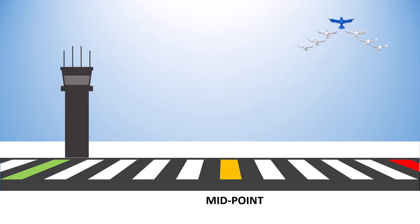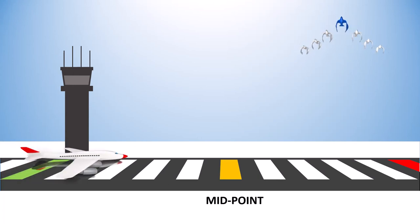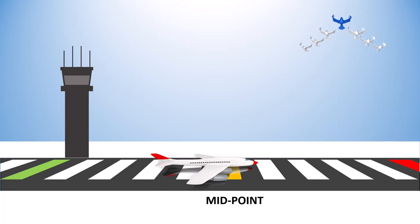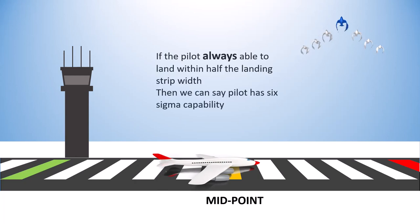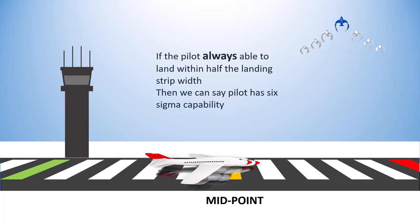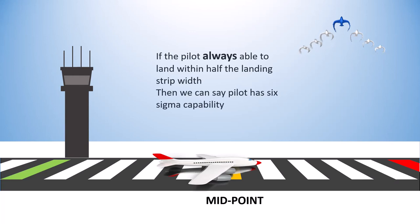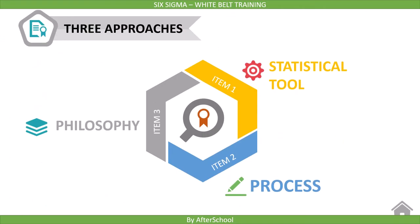The next lecture will be on what is Six Sigma. Here, first we will cover the definition of Six Sigma, and then we will see a simple example of a pilot landing on a strip. This will help you to understand Six Sigma in simple terms. After this definition, we will cover the overview of Six Sigma, where we will cover Six Sigma as a tool, Six Sigma as a process, and Six Sigma as a philosophy.